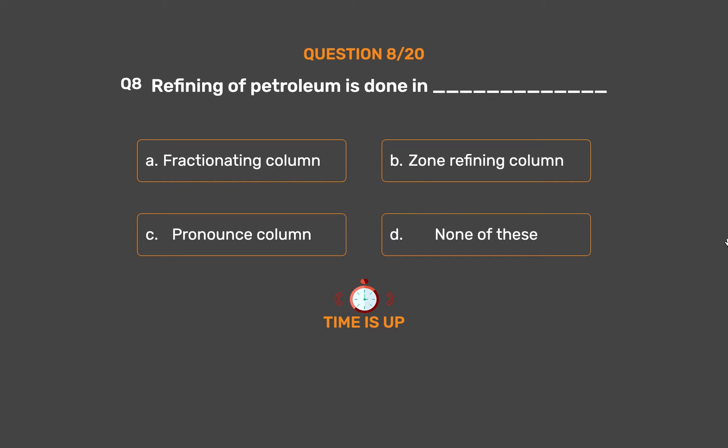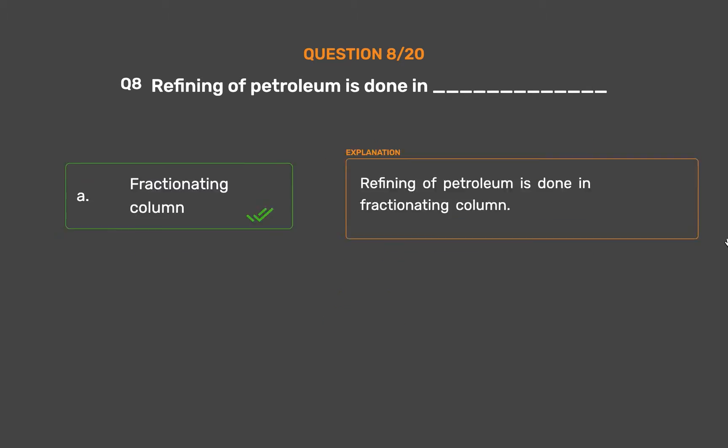The correct answer is Option A: Fractionating column. Refining of petroleum is done in a fractionating column.